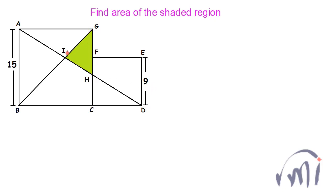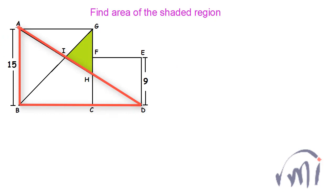To find the area of the shaded region, we first need to find the length GH. We can find CH and then subtract it from 15 to get GH. Triangle HCD and triangle ABD are similar triangles, since this angle equals this angle equals 90 degrees, and they share a common angle, so the third angles are also equal.